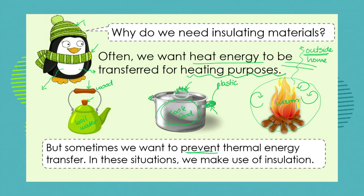Materials such as wool and wood, as well as plastic, and some kind of mechanism to keep convection currents sealed in the house — like closing windows and pulling a curtain over the window — are going to be instances of us using materials for insulation.